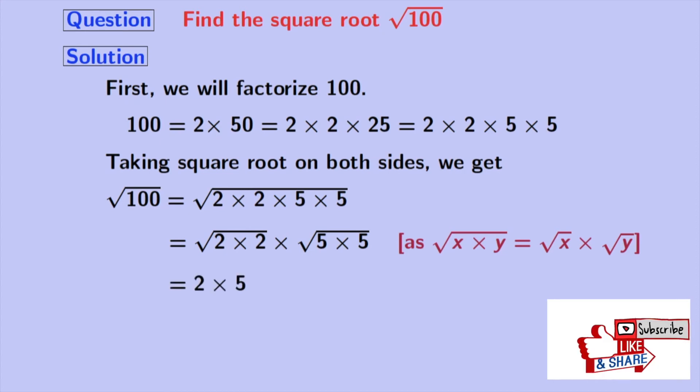Now, this equals 2 times 5 using the fact that square root of a times a is equal to a. In the first part, a is equal to 2 and in the second part, a is equal to 5.